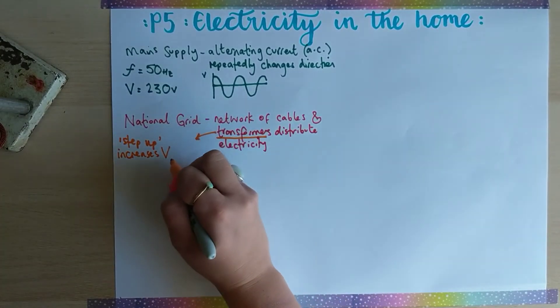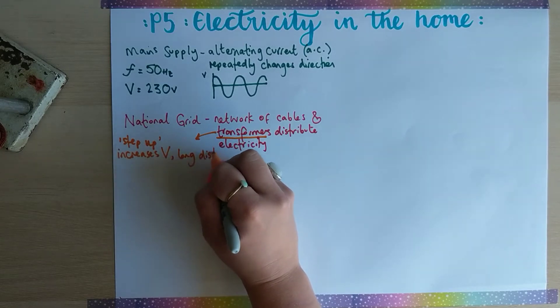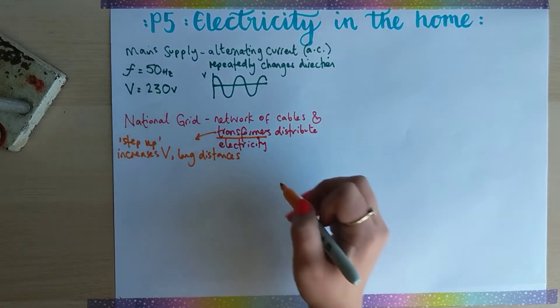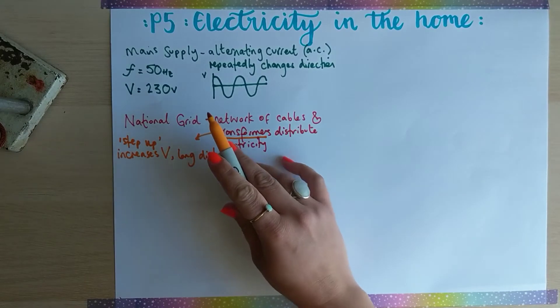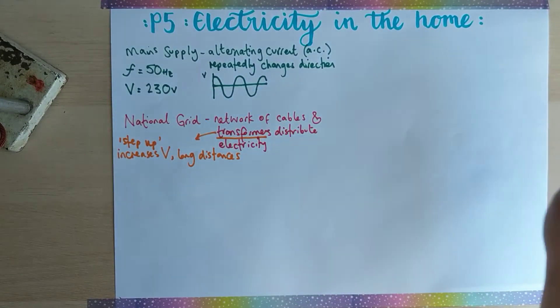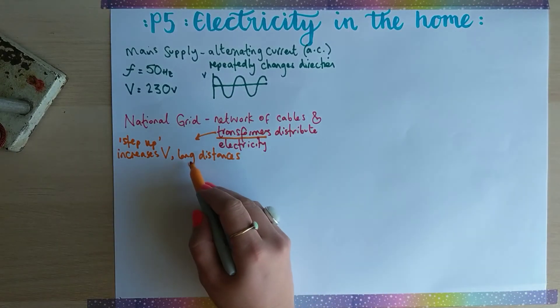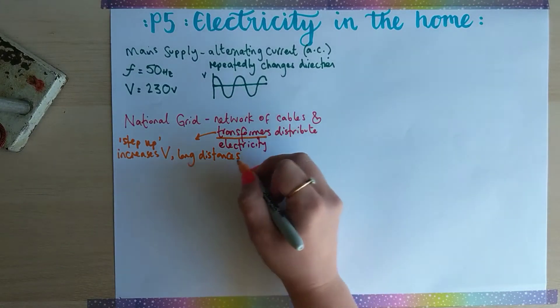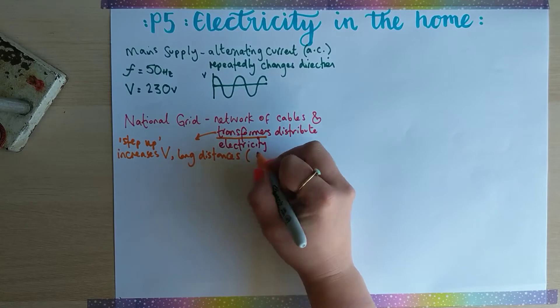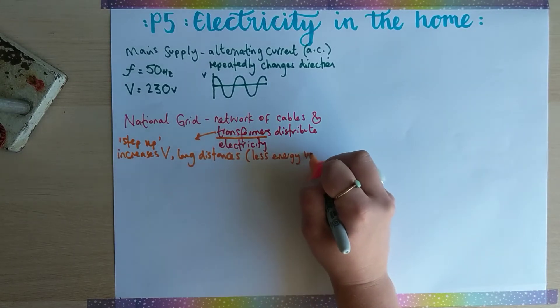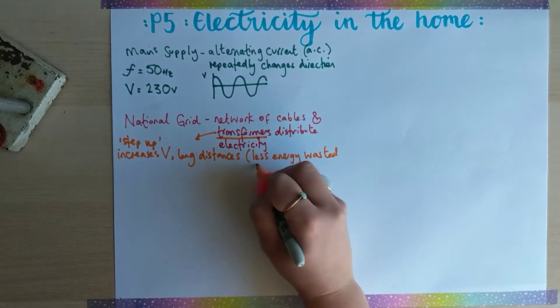This is used for long distances, going from the power station to a more local area or housing estate. When it's traveling over long distances, this is because we want less energy to be wasted through heating.